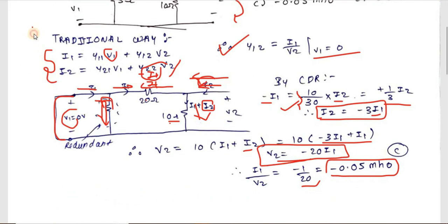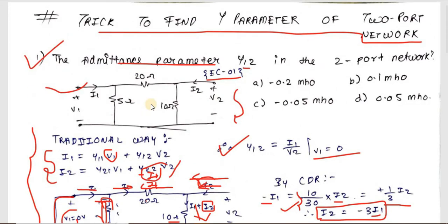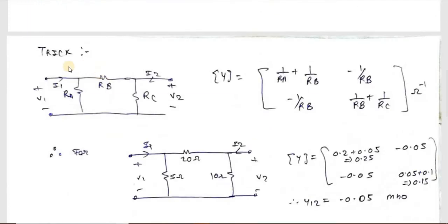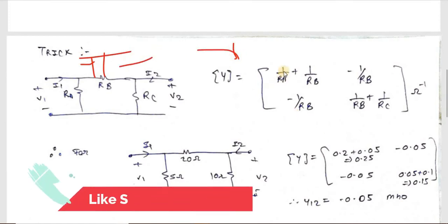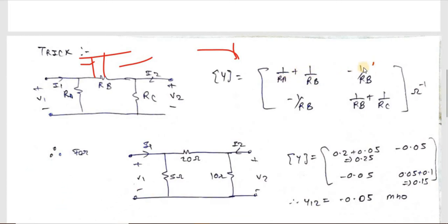You can clearly see that just to find one parameter, it took around 2 minutes. But with the trick, you can find all terms of the Y parameter in 30 seconds. The trick says: if you have a pi-network with resistances Ra, Rb, Rc, the Y parameters are: Y11 = 1/Ra + 1/Rb, Y12 = −1/Rb, Y21 = −1/Rb, Y22 = 1/Rb + 1/Rc.